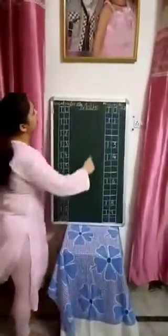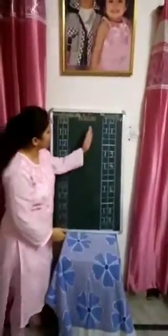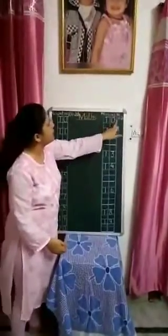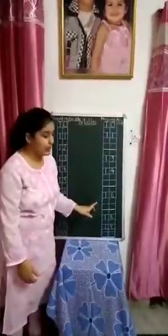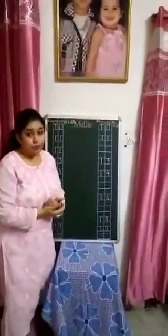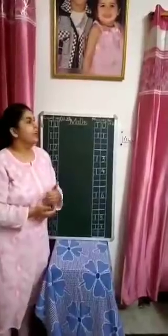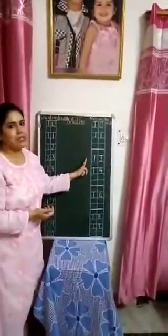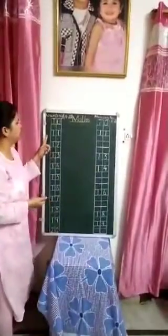So what work do we have to do today? Missing number. What work? Missing number. The teacher has written the counting 11 to 20, but some numbers are missing — she forgot to write them. We have to find out which numbers are missing and fill them in. Before starting, let's read the 11 to 20 counting once more together.